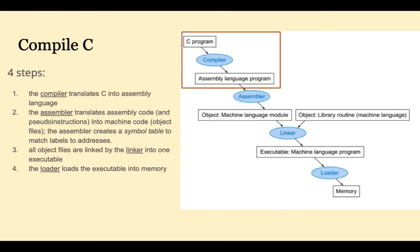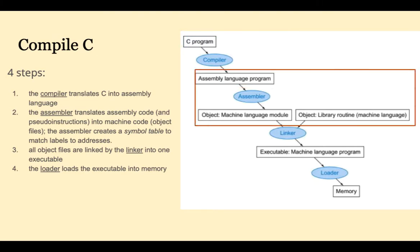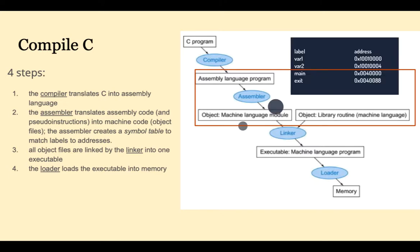The first step is that the higher-level language — in this case, a C program — is translated by the compiler into assembly language. Then the assembler translates the assembly code into machine code. The result will be object files. During this process, the assembler creates a symbol table to match labels to addresses.